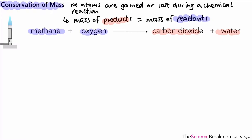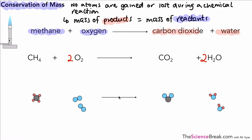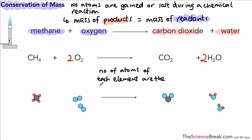Before counting atoms we need to look at the formula equation and balance it. You can pause and have a go, but the answers are a 2 in front of water and a 2 in front of oxygen — that balances it. Looking at the atoms in diagrammatic form, we can see that the number of atoms of each element are the same on each side of the equation.